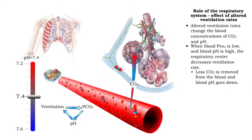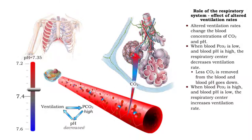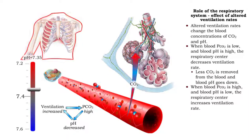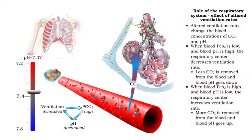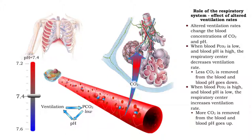When blood carbon dioxide level is high and blood pH is low, the respiratory center increases ventilation rate. More carbon dioxide is removed from the blood, and blood pH goes up.